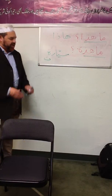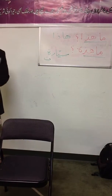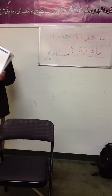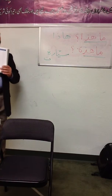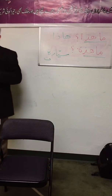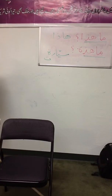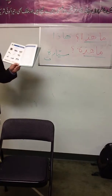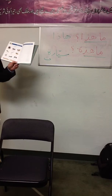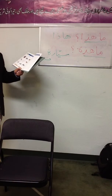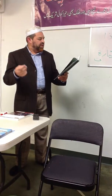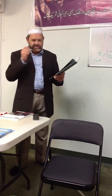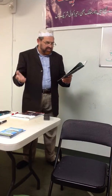The whole first page in the Arabic portion of the book introduces vocabulary using the word 'hadha.' The words are: hadha bayt — this is a house; hadha masjid — this is a mosque; hadha bab — this is a door; hadha kitab — this is a book; hadha qalam — this is a pen.